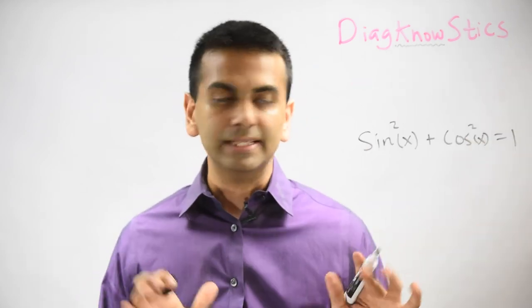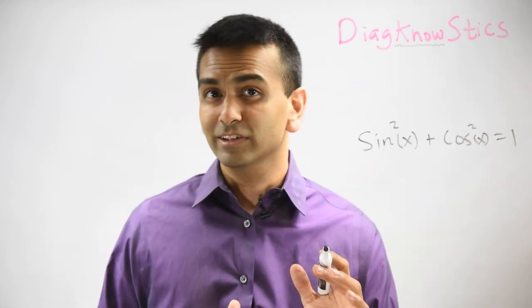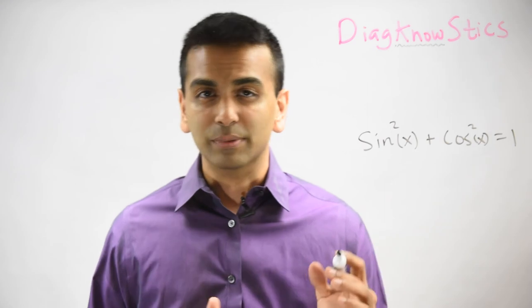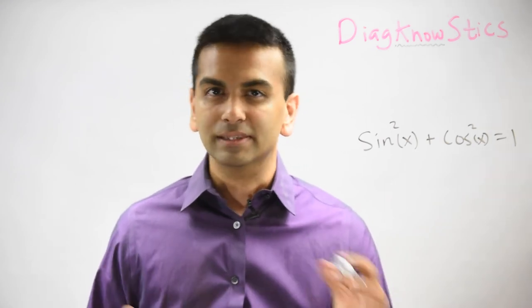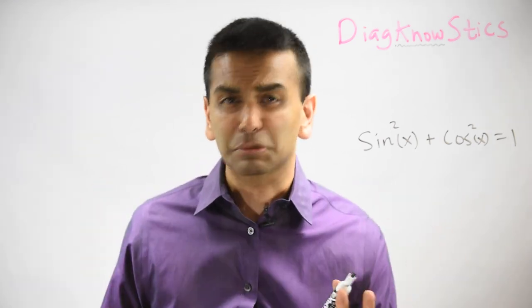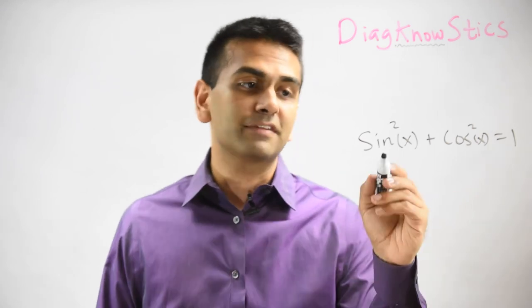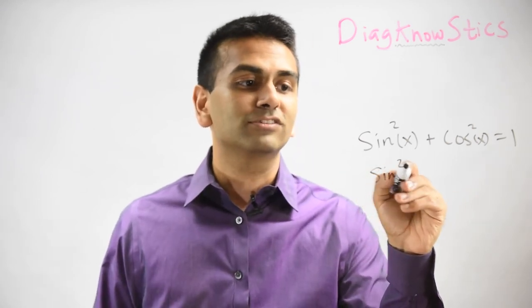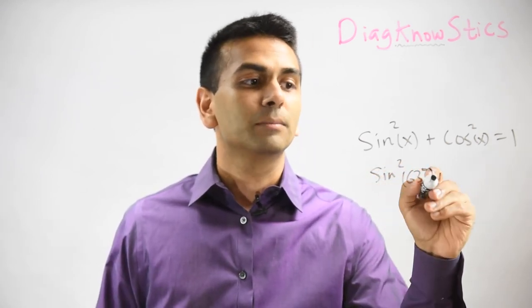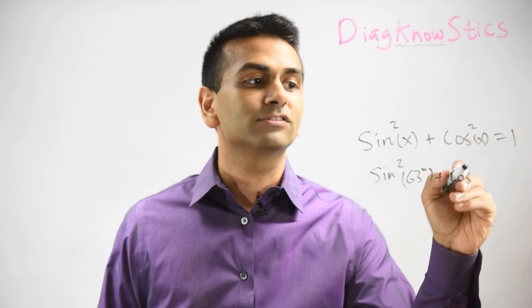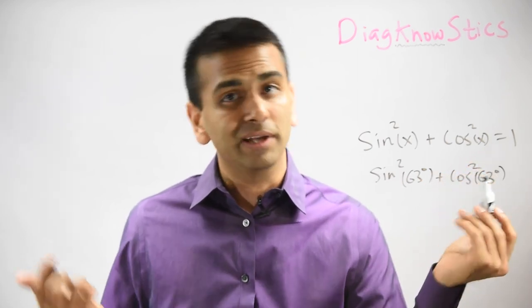One identity that commonly comes up is sine squared plus cosine squared equals 1. That really just comes from the Pythagorean theorem applied to the unit circle, but you don't really need to know about that. Just know that if the question is what's sine squared of 63 degrees plus cosine squared of 63 degrees, that's just equal to 1.